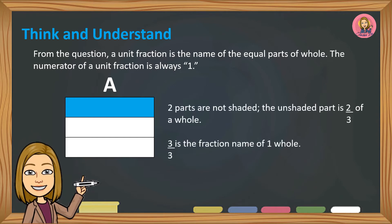Two thirds are not shaded. So the unshaded part is two thirds of a whole. And three thirds is the fraction name of one whole.